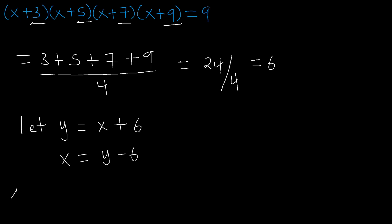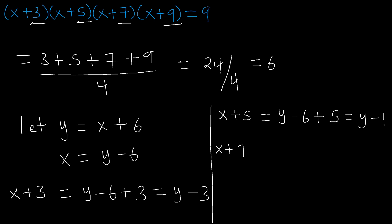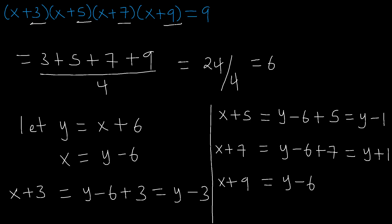For the first part, we have x plus 3, and this will be equal to — if we replace x with y minus 6 — we have y minus 6 plus 3, which gives y minus 3. For the second part, we have x plus 5, which becomes y minus 6 plus 5, giving us y minus 1. Then x plus 7 becomes y minus 6 plus 7, giving us y plus 1. And lastly, x plus 9 becomes y minus 6 plus 9, which equals y plus 3.